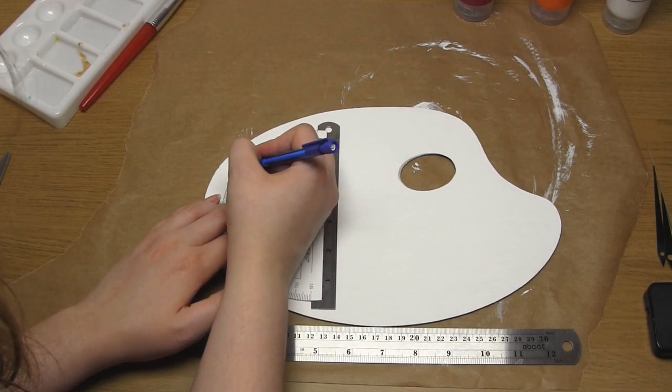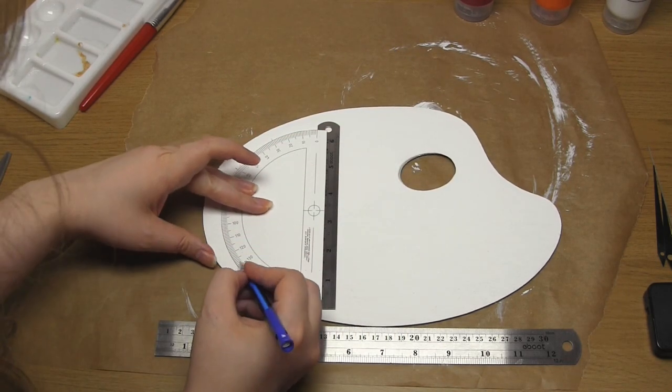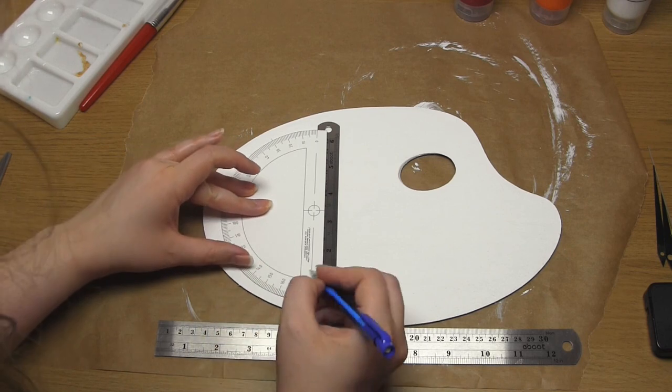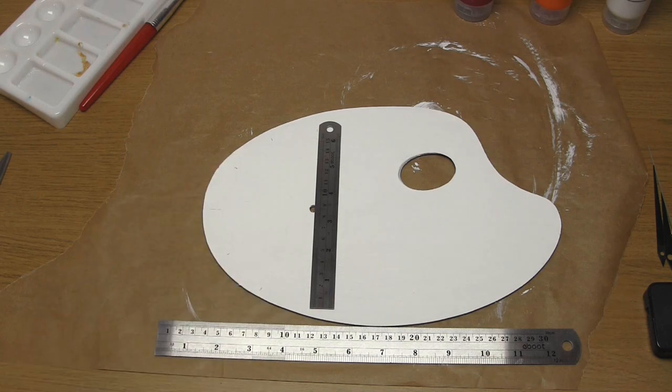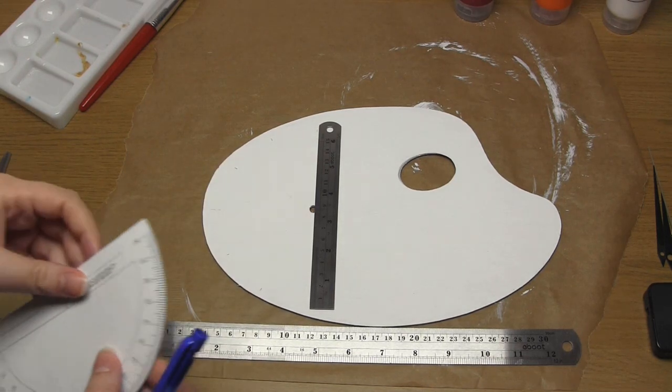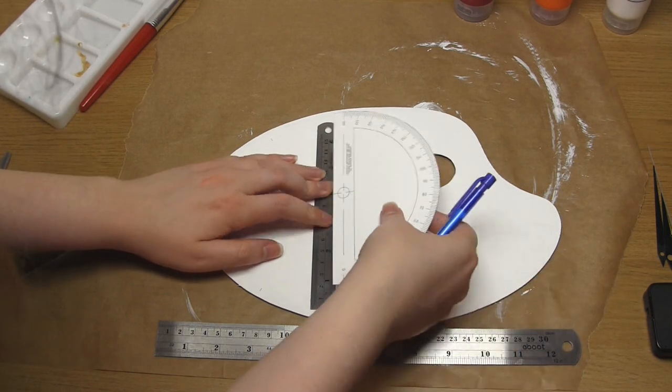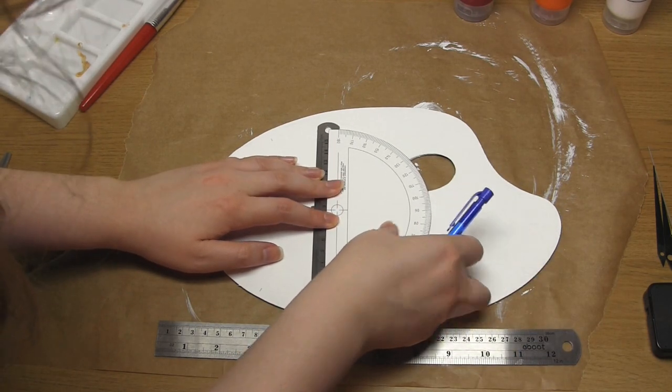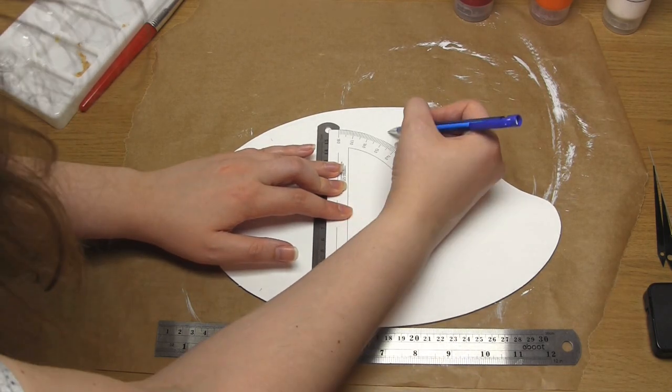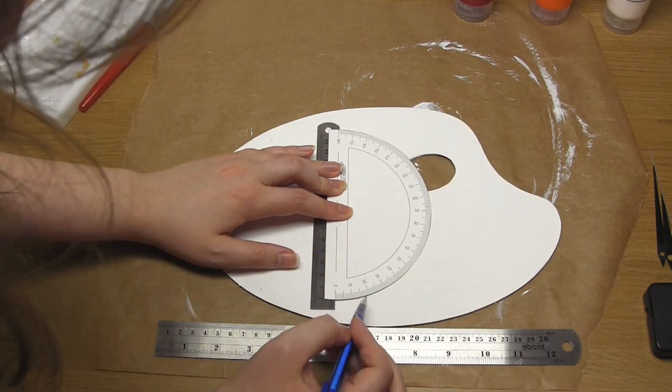All of the numbers on the clock are 30 degrees apart, so you just need to make sure the protractor lines up with that central ruler and then mark 30 degrees, 60 degrees, 90 degrees, etc., all the way around. As I said, I missed out the numbers 2 and 3, but for all of the other positions I just made a very faint mark about 1cm from the edge of the palette.